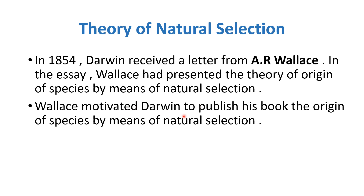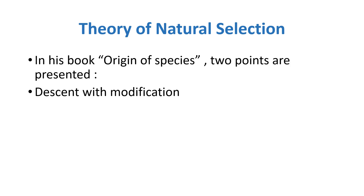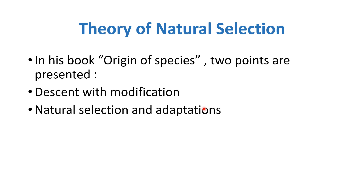Wallace motivated Darwin to publish his book, The Origin of Species by Means of Natural Selection. Darwin's book has two basic points: one is descent with modification, and the second is natural selection and adaptations.